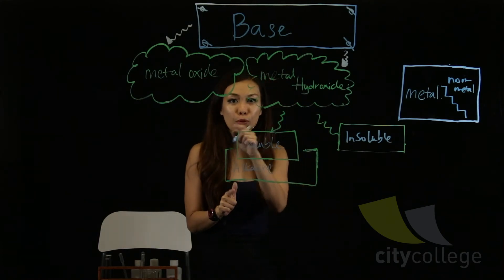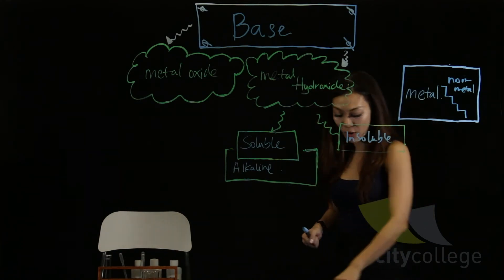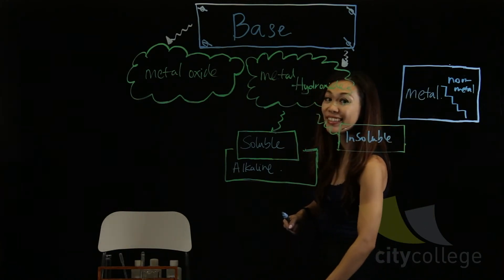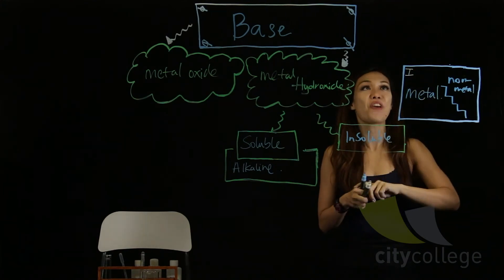And which group of the periodic table did I mention before that they are called alkaline metals? It's none other than your group one. Think about it. Tell me your answer. If your answer is, oh, I know, it's group one. Very good.